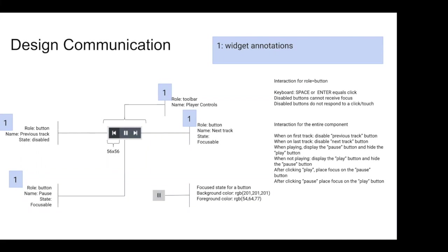The previous track is a button with the accessible name 'Previous Track' and it's currently disabled. The play/pause button is currently playing (showing pause), it's also a button with the name 'Pause', and it's focusable. The previous track being disabled means it's not focusable — it's important the designer thinks about these things so the developer can implement them correctly. The next track button is also a button and focusable. The wrapping element — often overlooked — should be a toolbar with the accessible name 'Player Control', so when an AT user tabs into it they hear the purpose of the group.